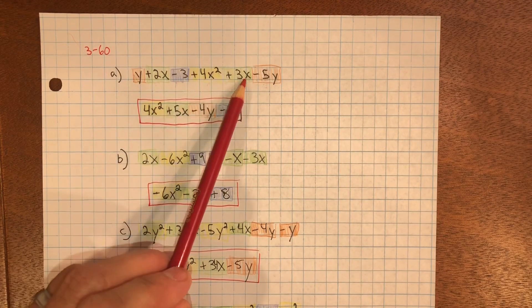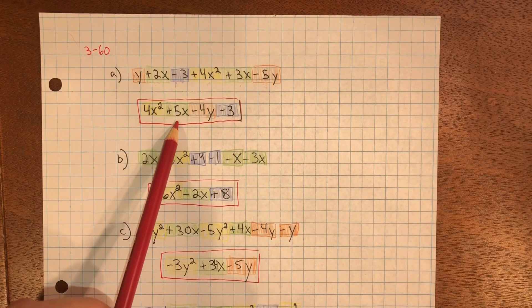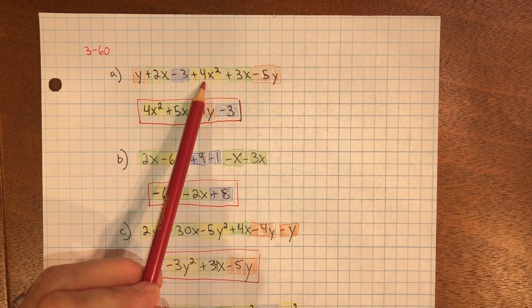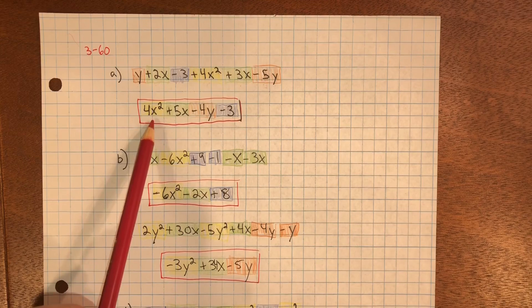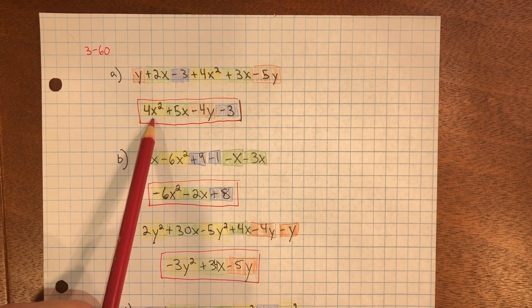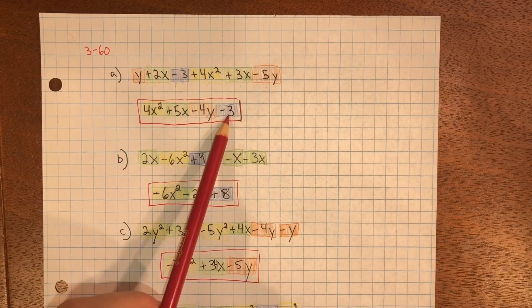So negative 5y and positive 1y equals negative 4y. 2x plus 3x is 5x. 4x squared, just 1, so there's 4x squared. And negative 3.